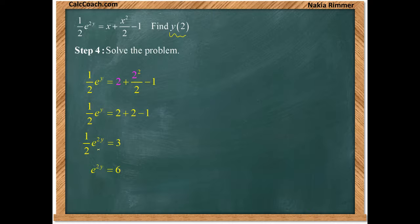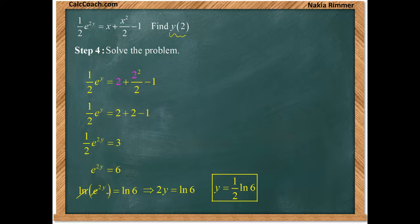So 2 plus 4 over 2 is 2 plus 2 so that's a 4 minus a 1 is a 3. Times everything by 2 and now we're ready to get to the y by taking the natural log of both sides because these guys are inverse operations of each other and that's how they cancel. So we'll get that 2y is the natural log of 6 or that y is one half of the natural log of 6.